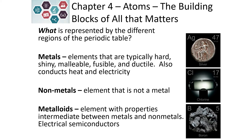Metalloids are elements that have properties that are a little bit like metals and a little bit like non-metals. We sometimes refer to these as semiconductors or electrical semiconductors. This is why metalloids are typically what we use for computer processors. Silicon is a good example, as well as boron.